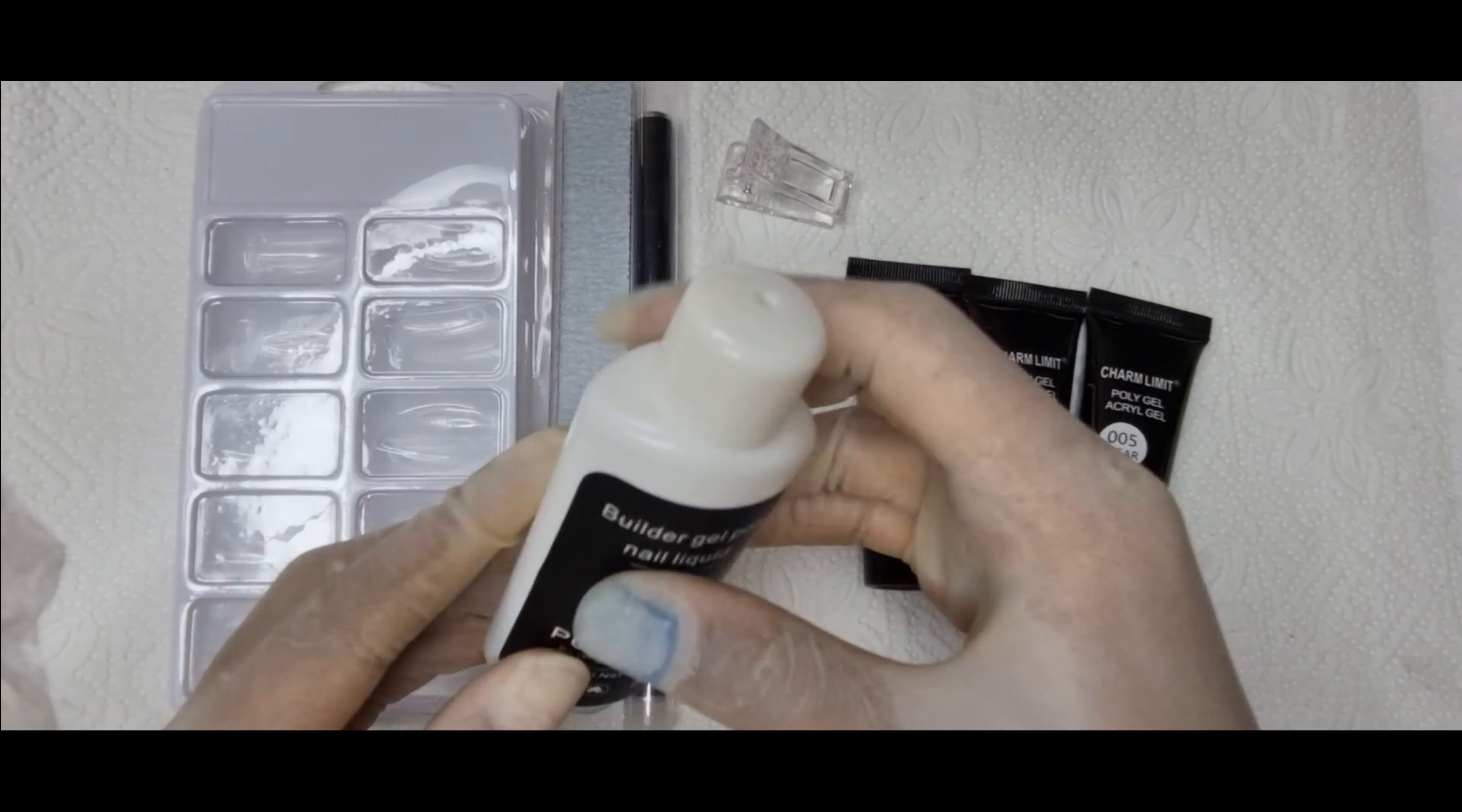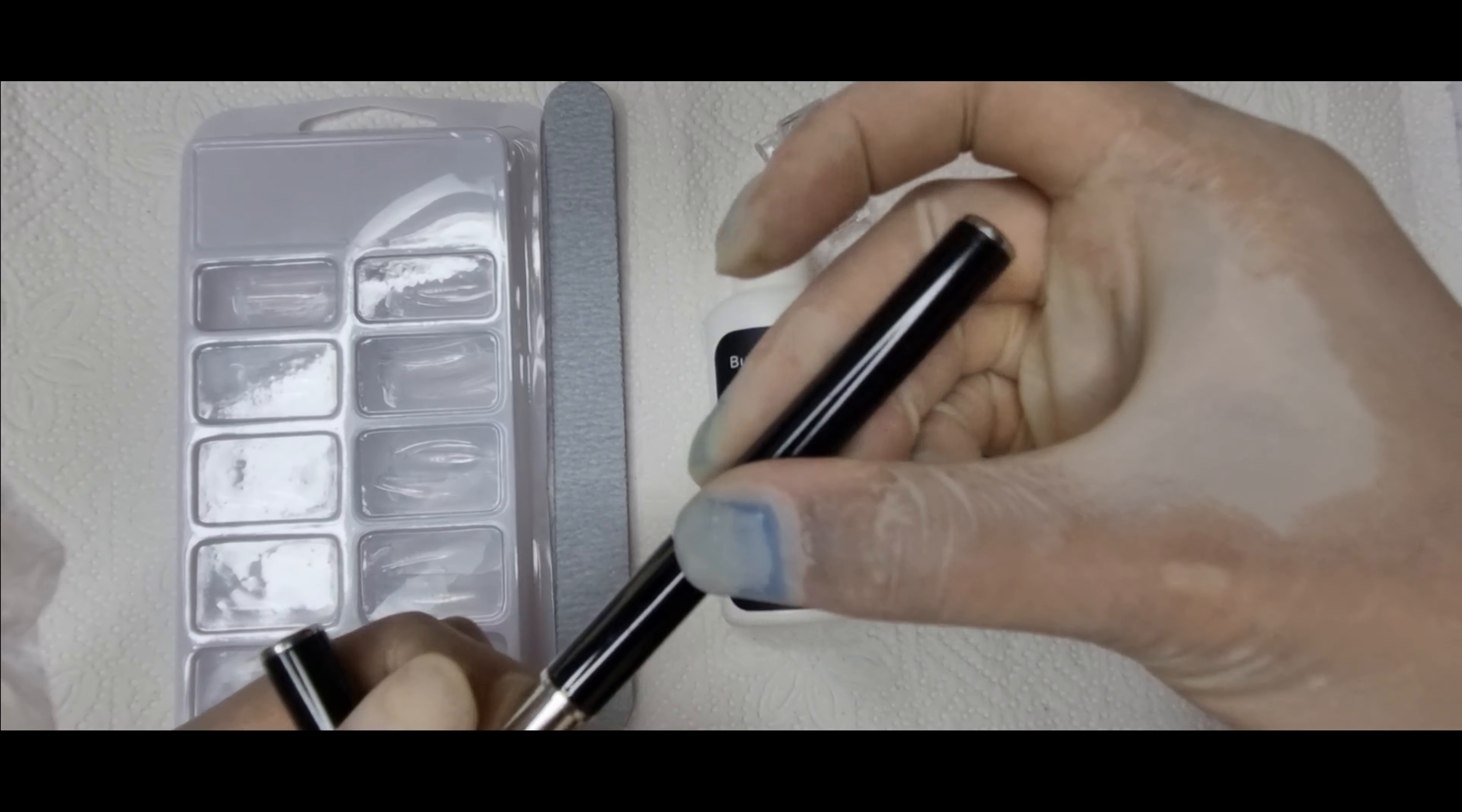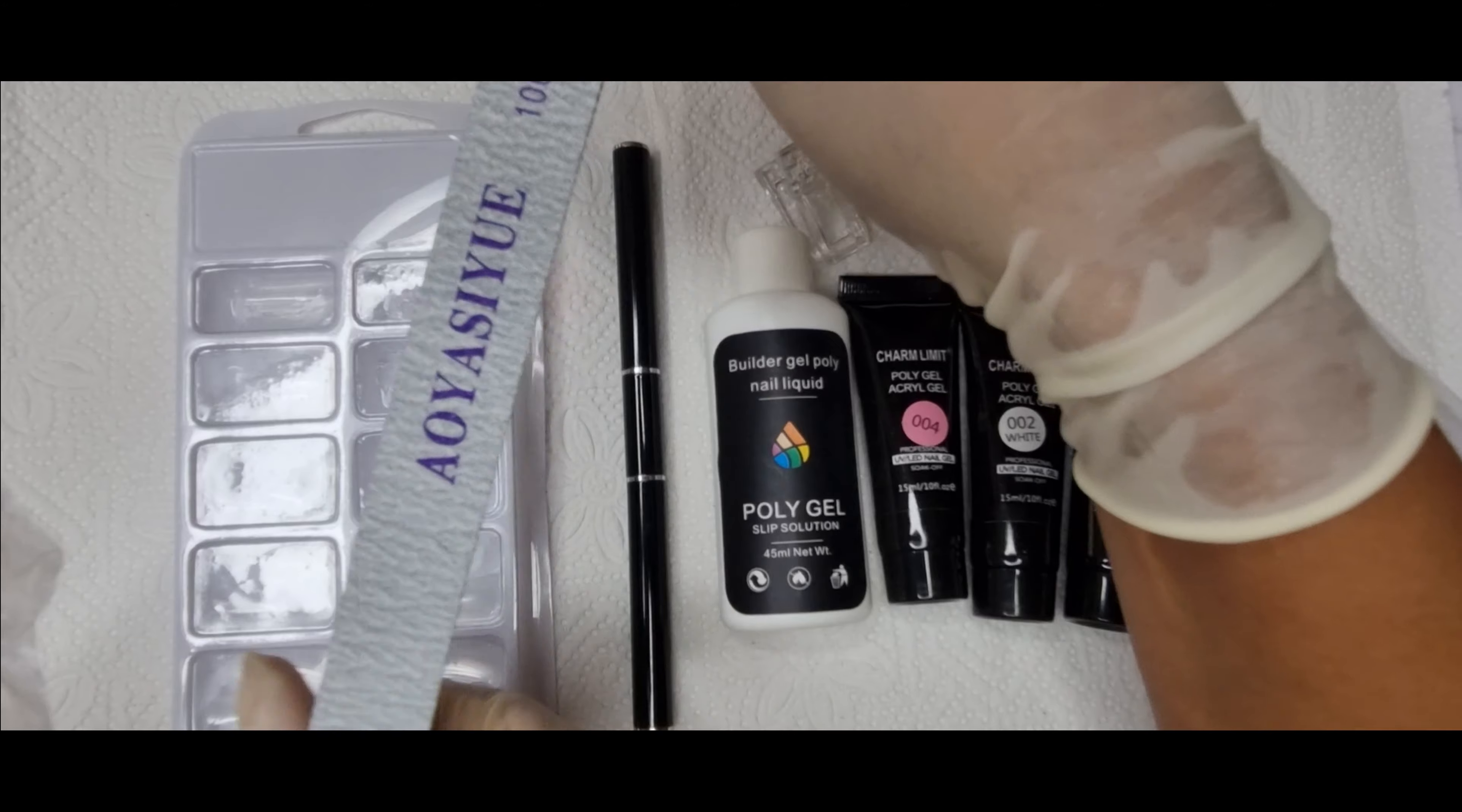A poly gel clip. Now I'm not a big fan of using poly gel clips and I will show you why in this video. A poly gel brush, and usually poly gel brushes come with a spatula on one side and a gel brush on the other end, and a 100 and 180 grit nail file.